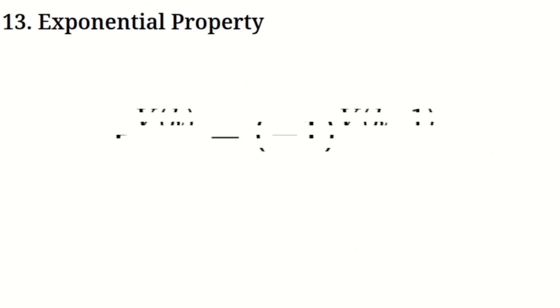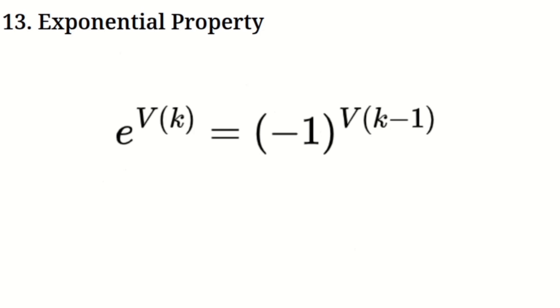Exponential property. The exponential property helps connect virtual numbers with the traditional exponential function. When you raise E, the base of natural logarithms, to the power of a virtual number, the result is related to negative one raised to the power of the previous exponent. This is an important property that extends how we think about exponentiation within the virtual number system.